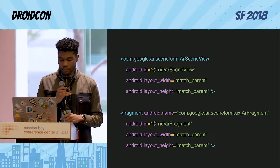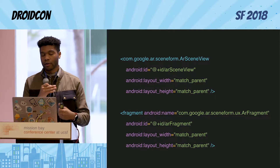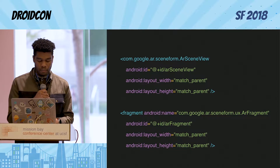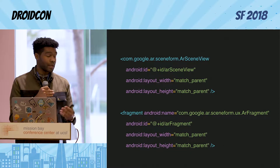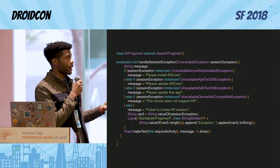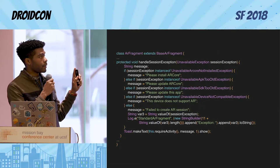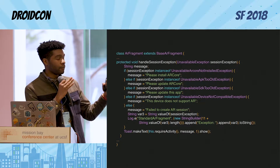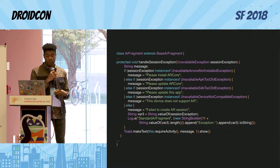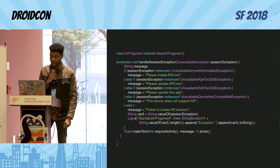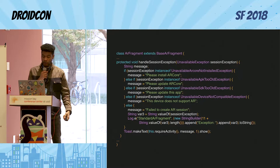All you have to do is add ARFragment to your view. It's going to automatically request whether ARCore is installed, what version it is, if you have the camera permission, and things like that. If you wanted to customize this, you could extend from ARFragment and handle the exceptions yourself. BaseARFragment is actually what makes the request and handles the flow of permissions and making sure that the phone is compatible for ARCore.